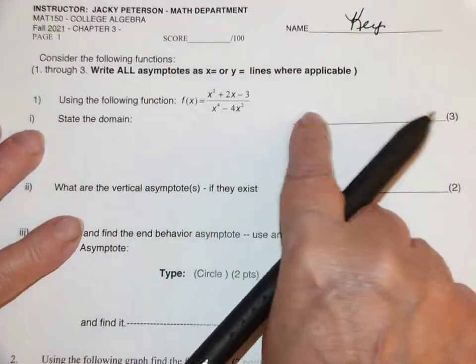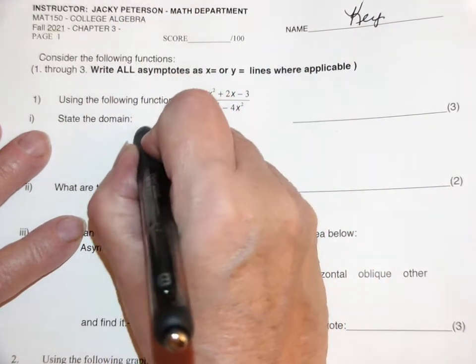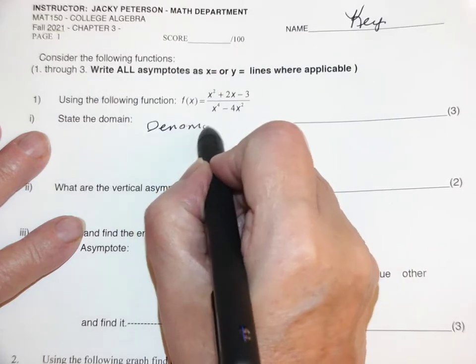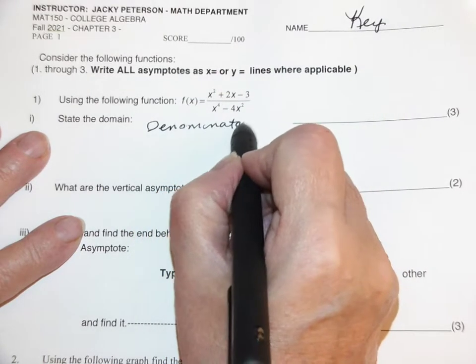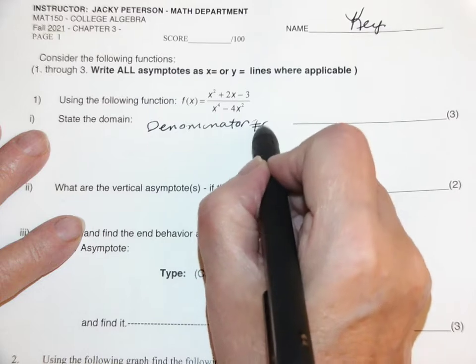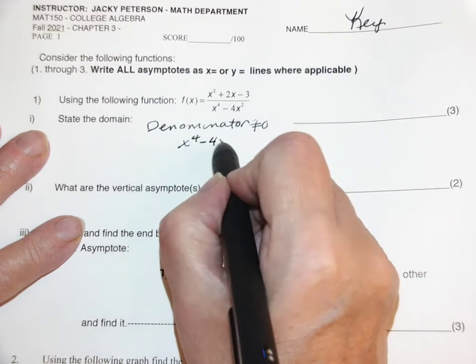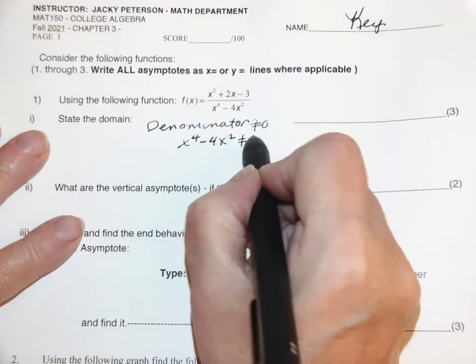Okay, so here we go. State the domain. Well, the denominator can't be zero, or x to the fourth minus 4x squared can't be zero.